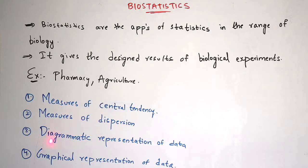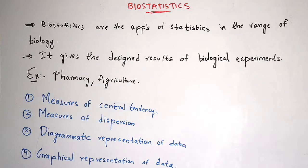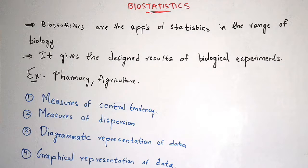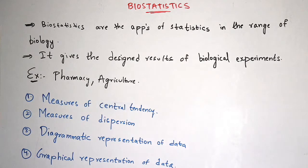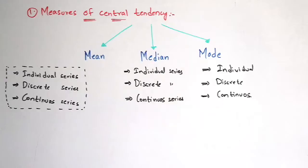The types of biostatistics are: measures of central tendency, measures of dispersion, diagrammatic representation of data, and graphical representation of data. In this video I am going to give you just the formulas, and from the next video I am going to give you the derivation of the formulas along with examples showing how to calculate sums.